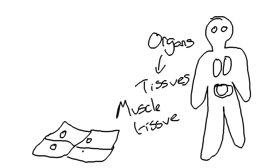I've just drawn four cells here, but obviously it's going to be a lot bigger. So muscle tissue is made up of muscle cells — individual muscle cells.